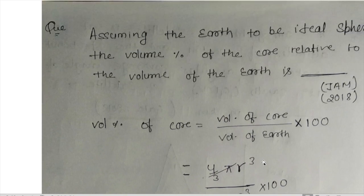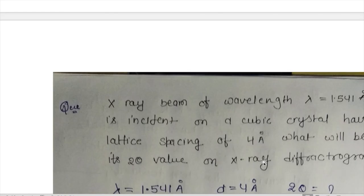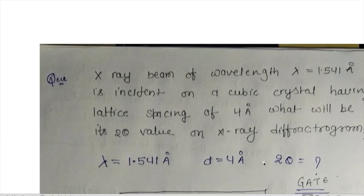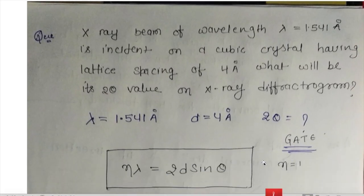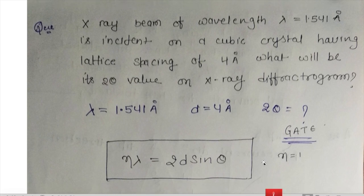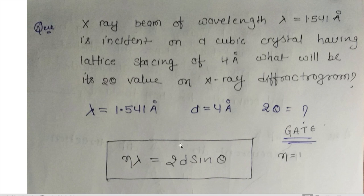Moving to the next question: an X-ray beam of wavelength 1.541 Angstroms is incident on a cubic crystal having a lattice spacing of 4 Angstroms. What will be the 2-theta value on an X-ray diffractometer? To solve this problem, we use Bragg's formula: nλ = 2d sin(theta).